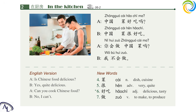课文 2 Text 2。中国菜好吃吗？中国菜很好吃。你会做中国菜吗？我不会做。New words: 菜、很、好吃、做